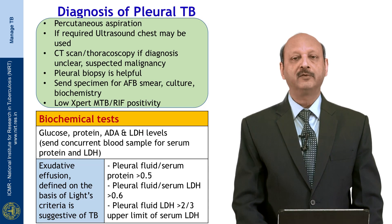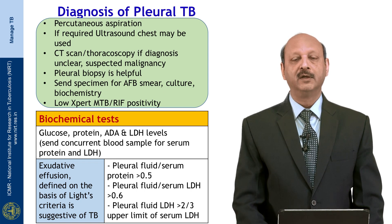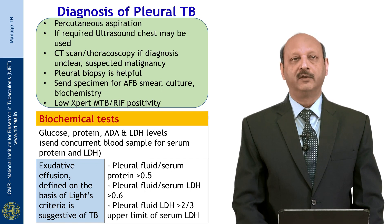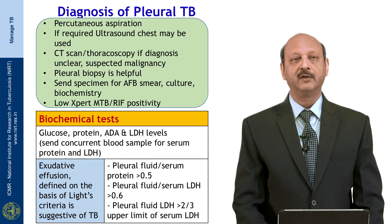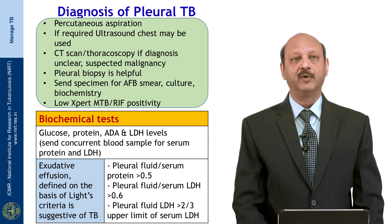For pleural tuberculosis, the simplest bedside method is percutaneous aspiration. This specimen can be sent for AFB smear, culture and biochemistry. GeneXpert MTB sensitivity is low, so it may not be sent for that. If required, ultrasound chest can be done. If diagnosis is still uncertain, CT scan or thoracoscopy can be used, and pleural biopsy is usually helpful. The biochemical tests to be done are glucose, protein, ADA and LDH levels, and simultaneously blood proteins and LDH.